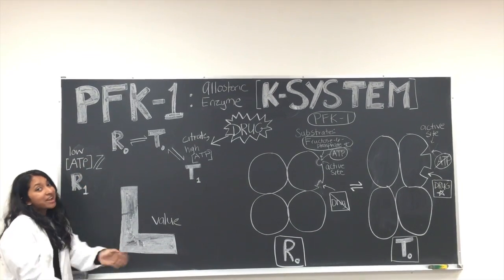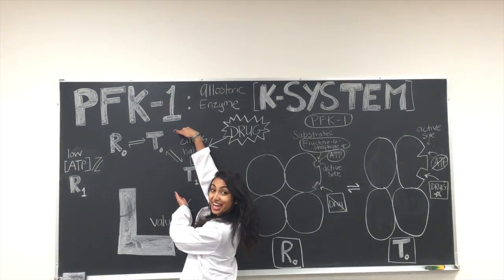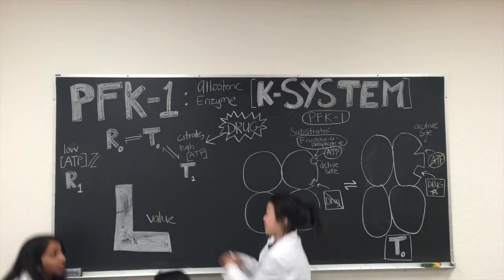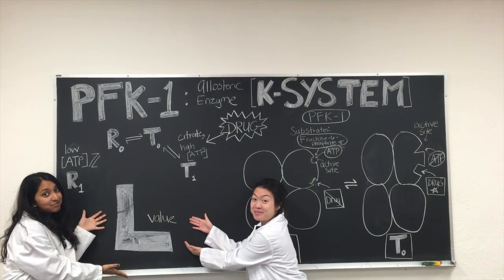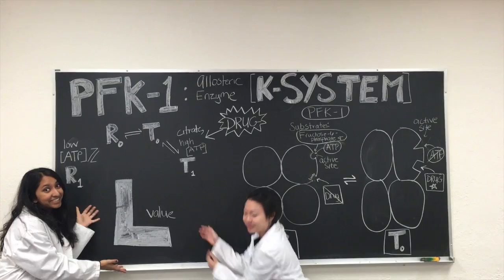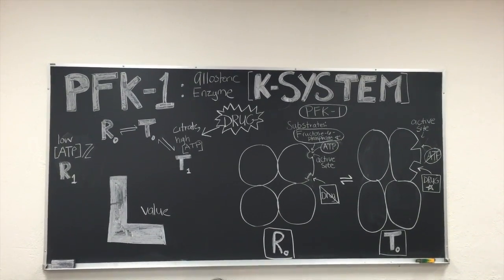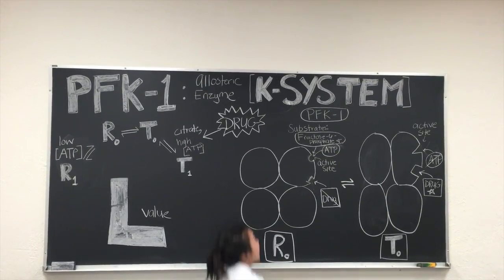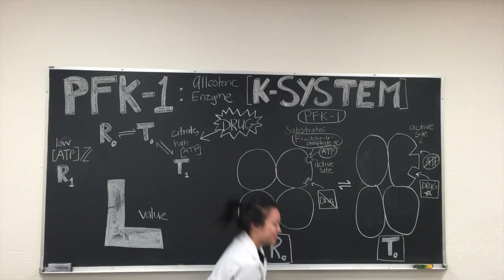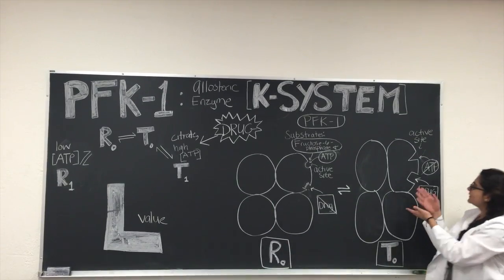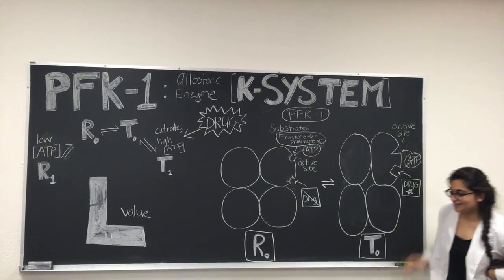The drug will never bind to the T zero. Only the titan active form. Look at that L value, ain't it big? Remember that allosteric enzymes have many different shaped pockets. Affectors bind to places, not the active site.